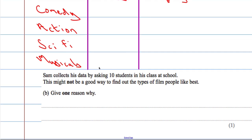It says in the second part that Sam collects his data by asking ten students in his class at school. This might not be a good way to find out films people like best. Give one reason why.